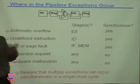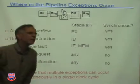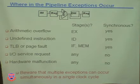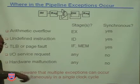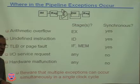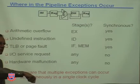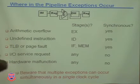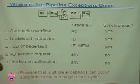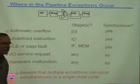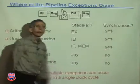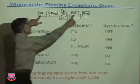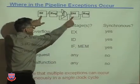A TLB or page fault is a bit hard to explain since we haven't studied memory yet, but these happen when you go to memory and find out what you want isn't there — it's on the hard drive. Your instruction caused it, but we have to stop your program, run an IO routine in the OS to bring in something from disk into memory, and then try again. So that's a synchronous exception.